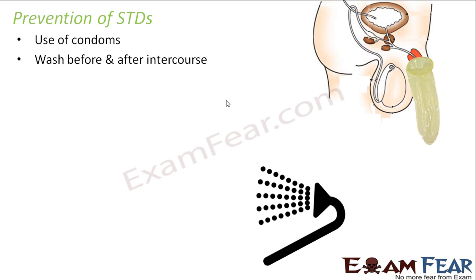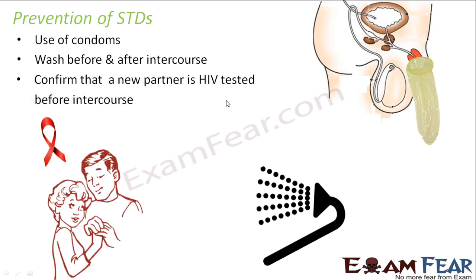Wash before and after intercourse to maintain hygiene, because reproductive organs involved in this process should be kept clean to avoid infections. Also, confirm that a new partner is HIV-tested before intercourse, since HIV spreads through sexual contact. Knowing that a partner is HIV-negative is an important precaution. These are some of the ways by which people can prevent sexually transmitted diseases.